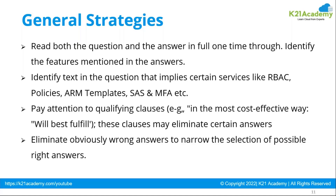Nobody is perfect, so you won't always find the right answer. In such situations, use the elimination approach. For example, if you know two options are definitely not possible because they don't fulfill the requirements, then the best suitable answer is a calculated risk between the remaining two options. That is how you can approach those questions.